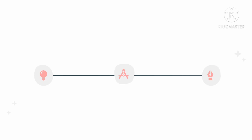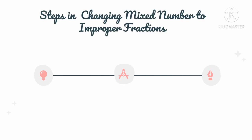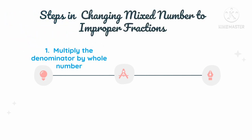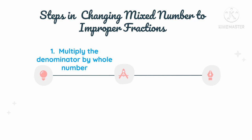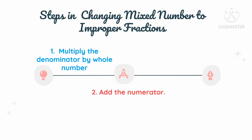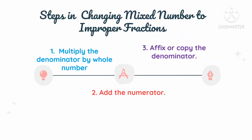We also follow steps in changing a mixed number to an improper fraction. First step: multiply the denominator by the whole number. Then add the numerator. And lastly, affix or copy the denominator.